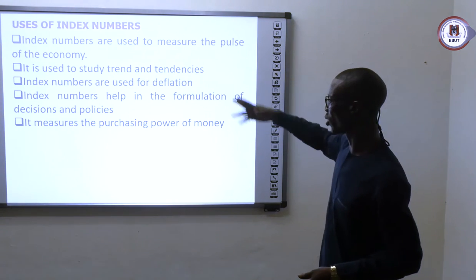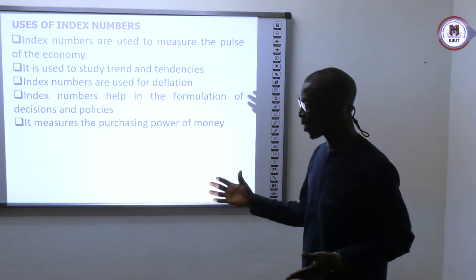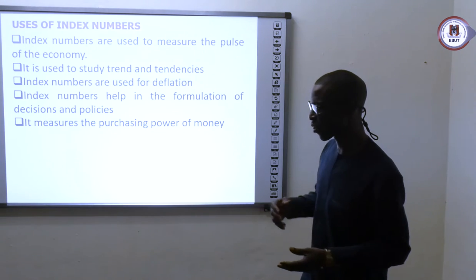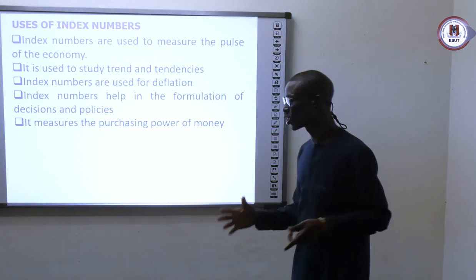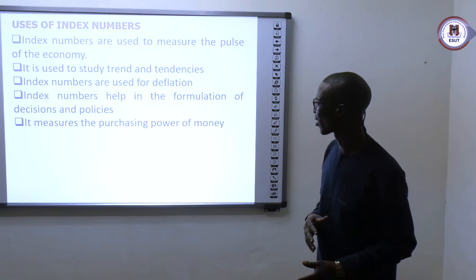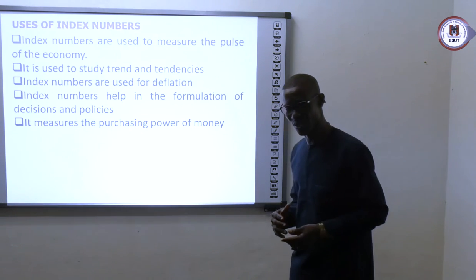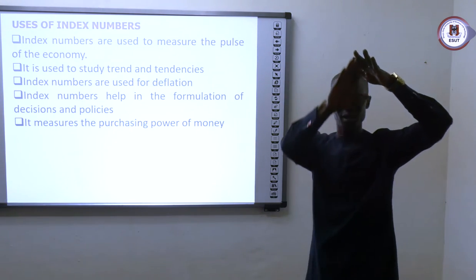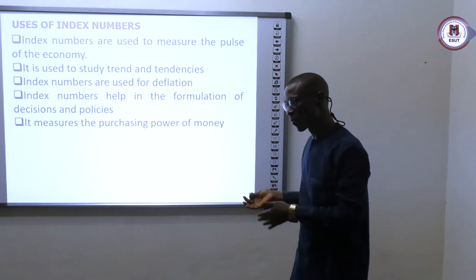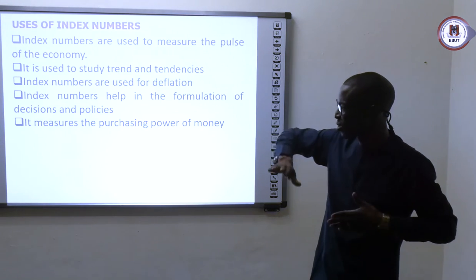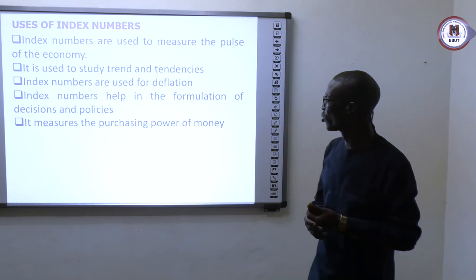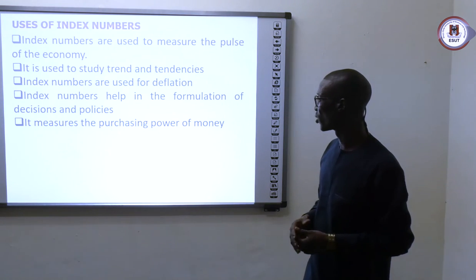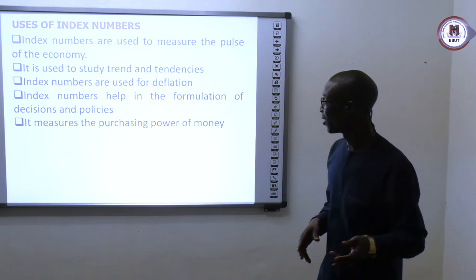The uses of index numbers: Index numbers are used to measure the state of an economy — its performance over time, where the economy has been, what changes are occurring, and the trajectory of the economy. They are also used to study trends and tendencies. Trends refer to the growth of an economy — whether it is growing downward or in a zig-zag shape. The trend of an economy's performance is normally used for projection, prediction, or forecasting.